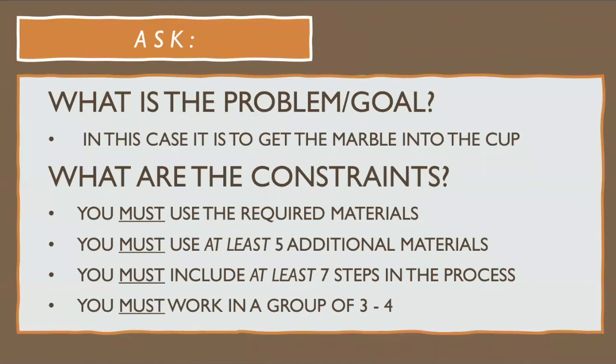Here's the breakdown of the different steps. For the ask step, that includes what is the problem, so identifying the problem or goal, and then what are the constraints. In the case of this project, the problem or goal is to get the marble into the cup, and the constraints are that you have to use the required materials. You have to use at least five additional materials, and you have to include at least seven steps in the process. Also, keep in mind that this is group work, so you must work in a group of three to four people.